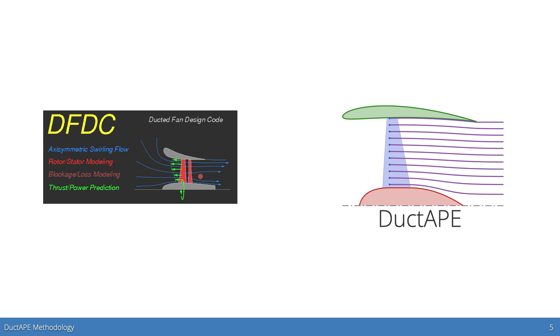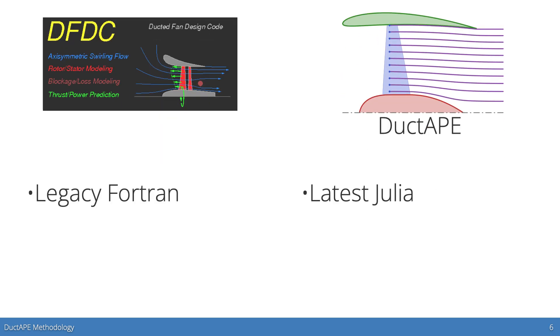The underlying methodologies of duct tape are based on those used for the ducted fan design code DFDC, which is an excellent code written in FORTRAN. The purpose of developing a new tool similar to DFDC, but not simply using DFDC, lies in our goal to explore electric ducted fan design spaces using gradient-based multidisciplinary optimization.